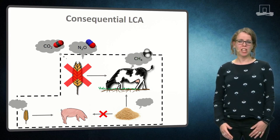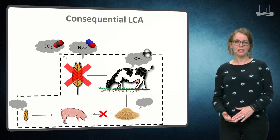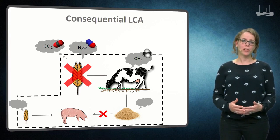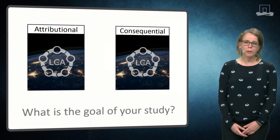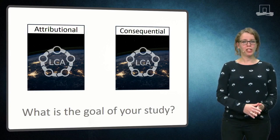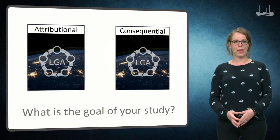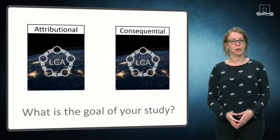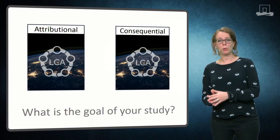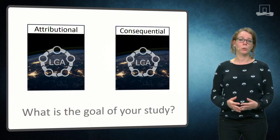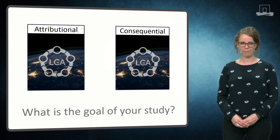So your system boundaries are defined by the processes that are affected, rather than by your own product system. Remember: while attributional LCA can help you to assess the environmental impact of a product or system in its current state, consequential LCA is needed when you want to assess the impact of a change in a system.